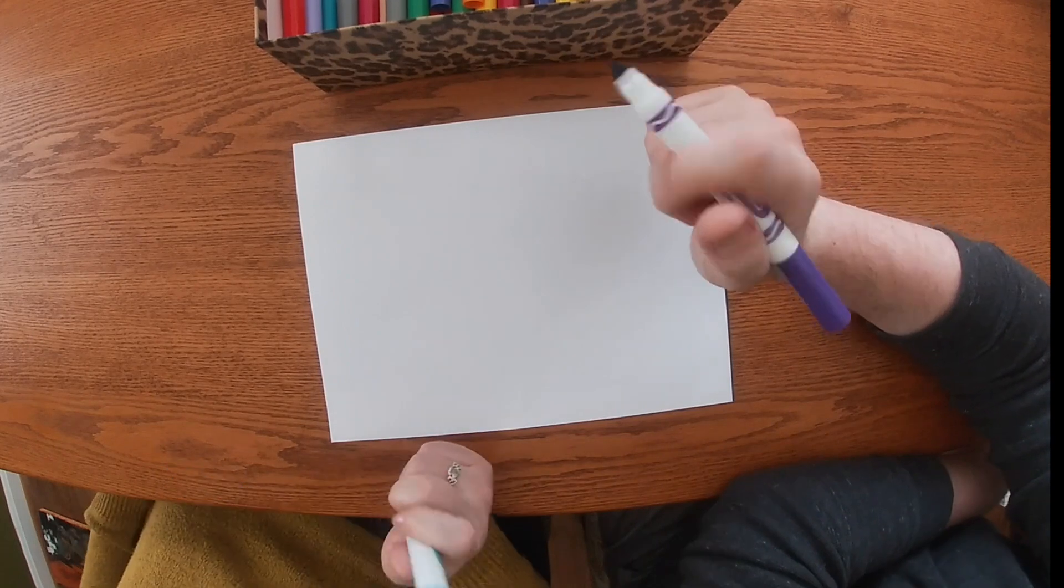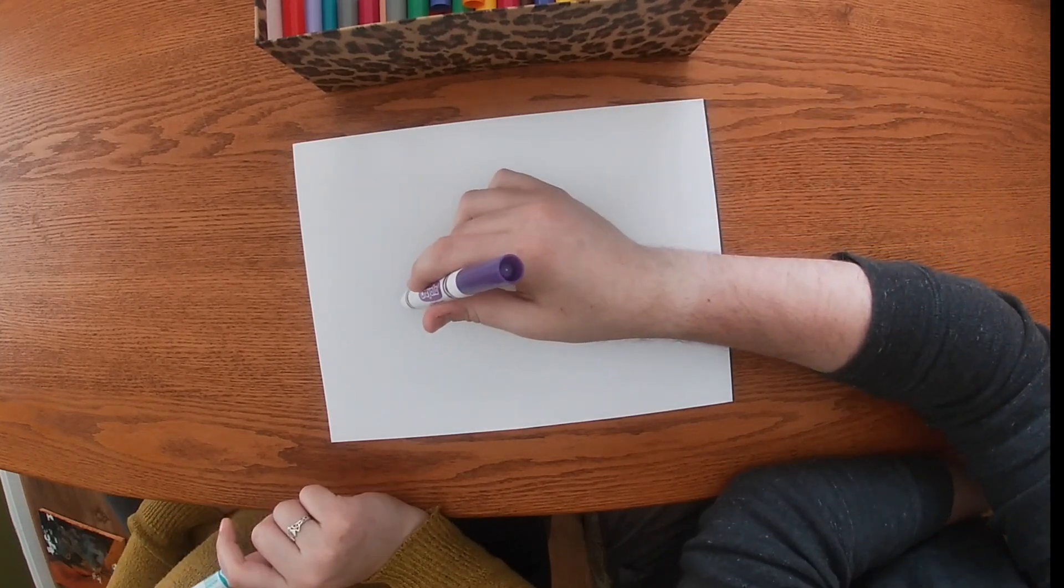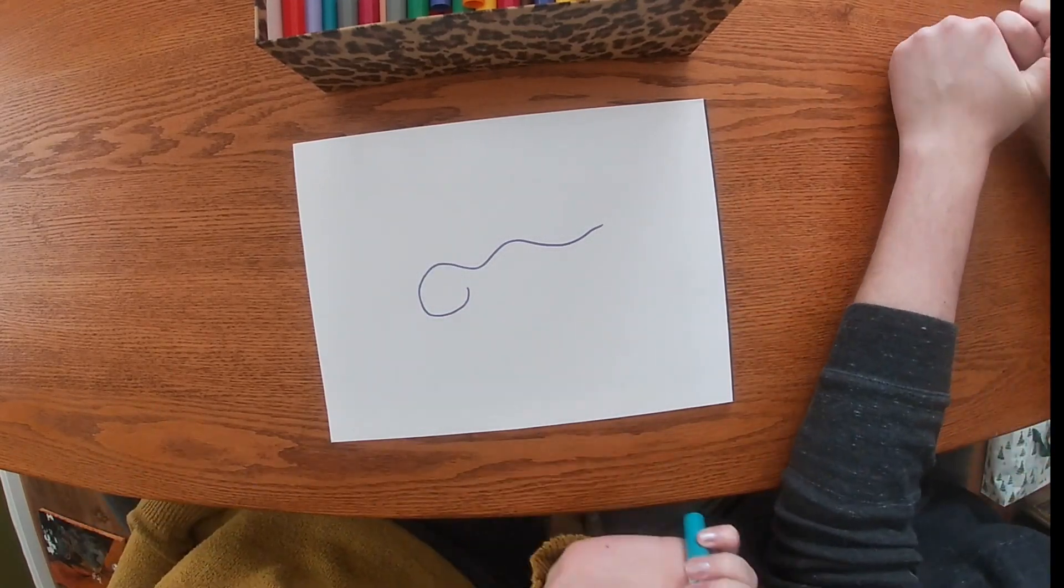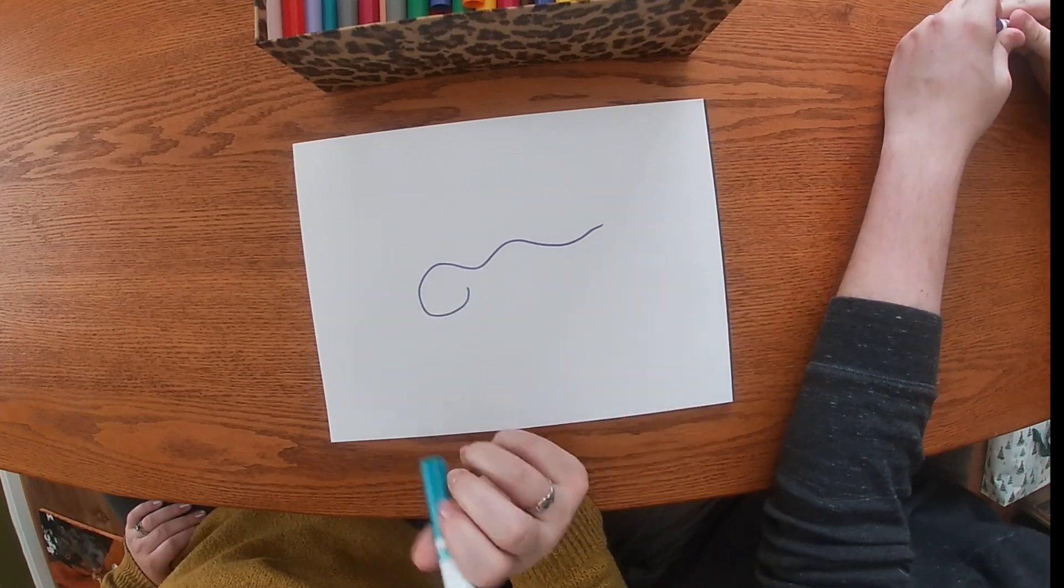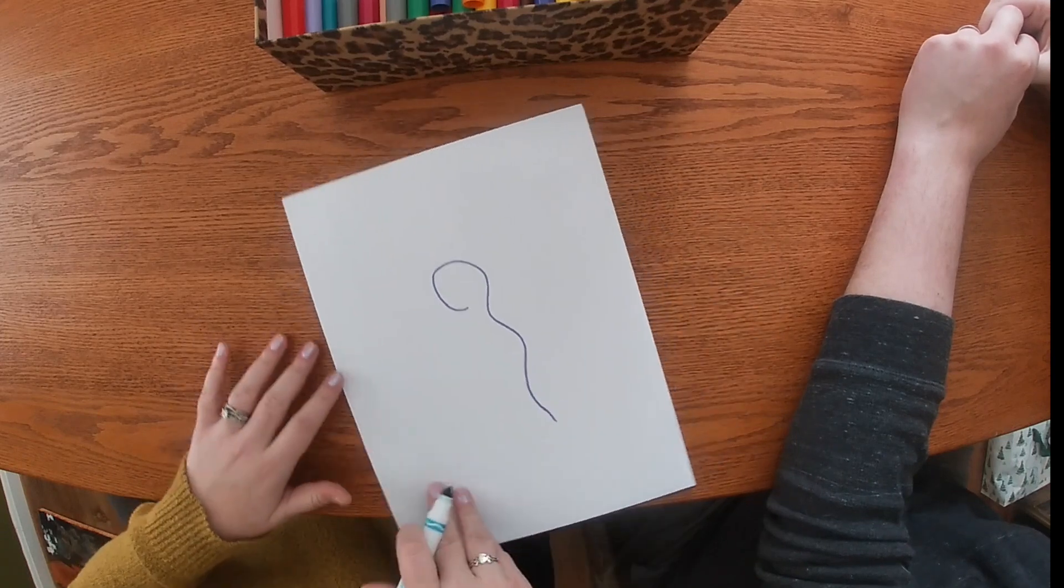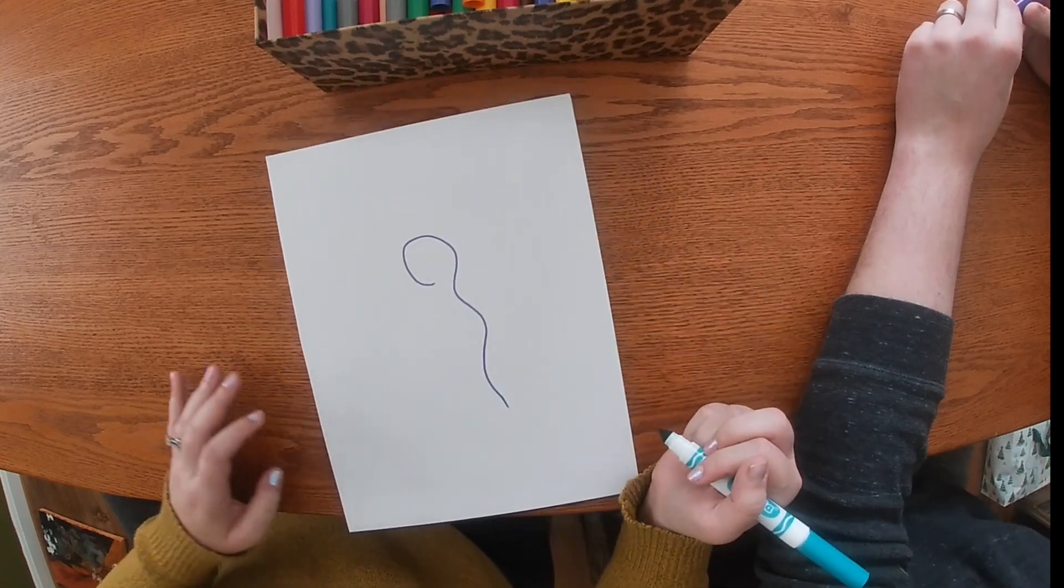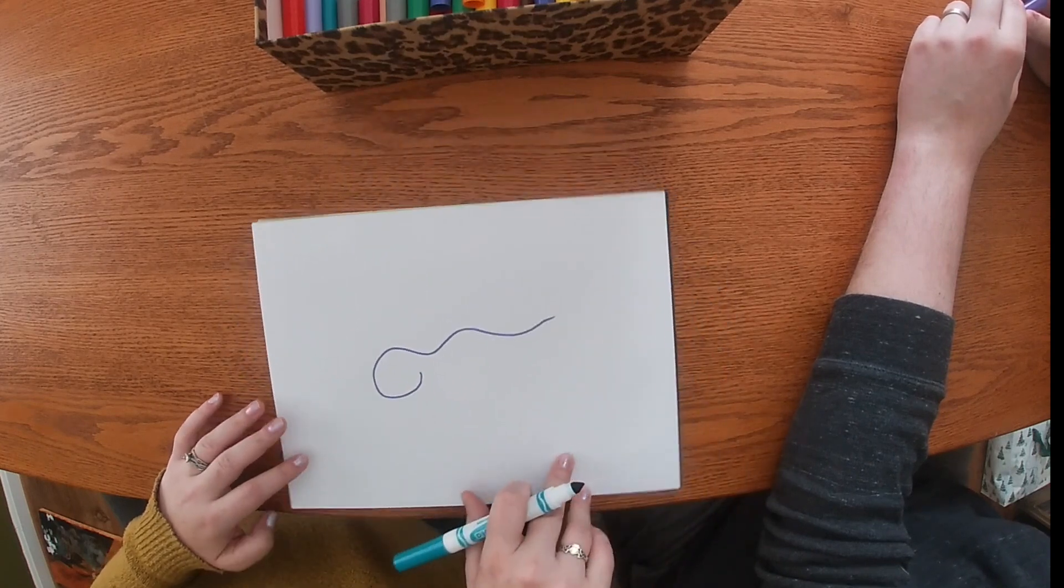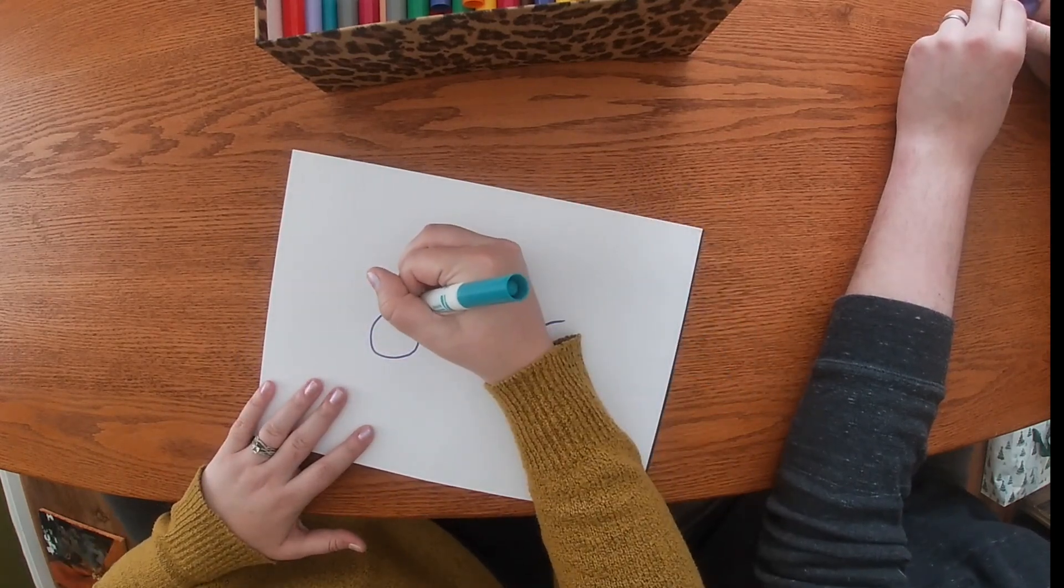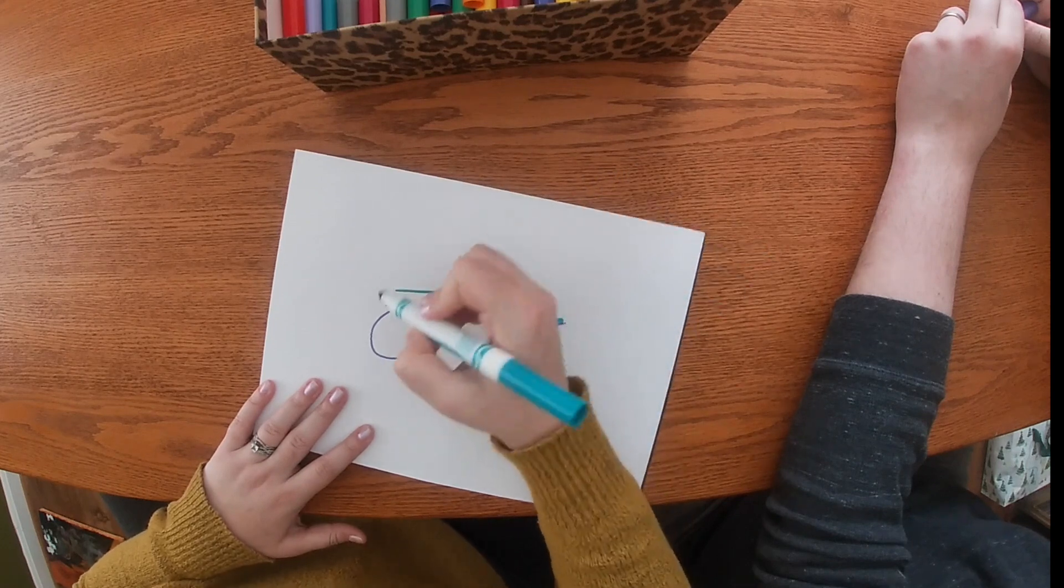Alrighty, so we each chose our favorite colors. And Mr. Jordan is the squiggler, scribbler, and he's going to start by making a squiggly line. There's two ways that you can play this game. There's the way that he just did with his eyes open and he just kind of drew, or you can have your eyes closed. So it's a really big surprise for everybody involved.